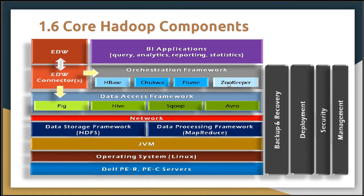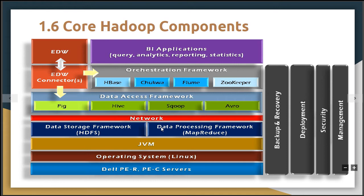This is the diagram where the core Hadoop components are included. This architecture is similar to the one seen in the previous lecture, but with a few additional things explained. At the bottom there is hardware — some servers. Above that is the operating system, specifically Linux. Hadoop is designed on the Java Virtual Machine, so JVM is located above the OS. On JVM there is HDFS and a data processing framework, MapReduce, which will be discussed in much more detail in coming lectures.